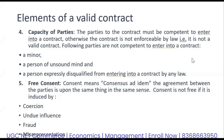The fourth element is capacity of parties, which means nothing but competence — whether the parties involved in a contract are competent or not, whether they are eligible to enter into a valid contract. If they are not, then the contract is not enforceable by law. A simple example: a minor. A minor is not competent and cannot be one of the parties in an agreement or a contract.